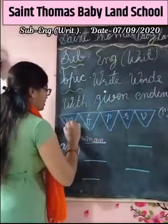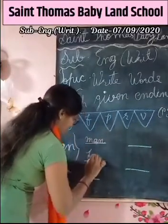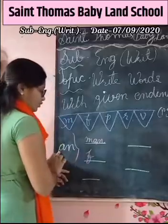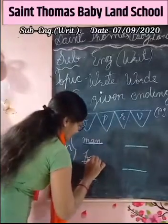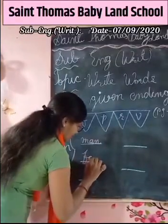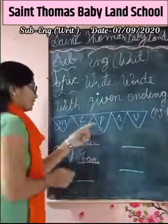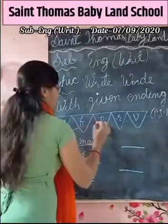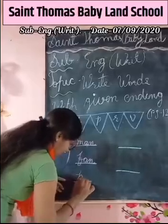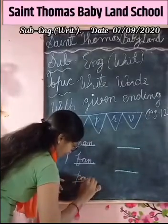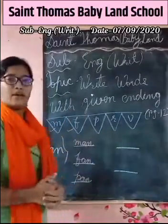Next letter is F. So write here F. Two ending letters A and N. F, A, N — Fan. Next letter is P. P and 2 ending letters A, N. P, A, N — Pan.